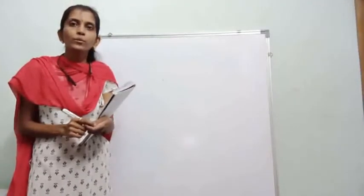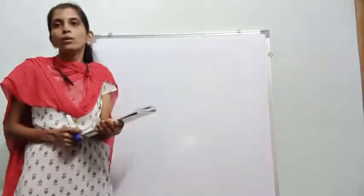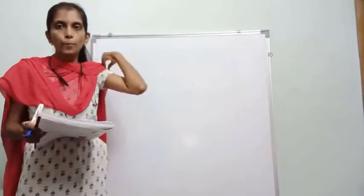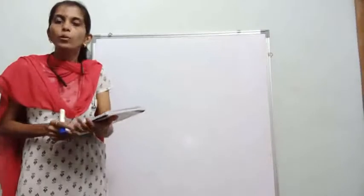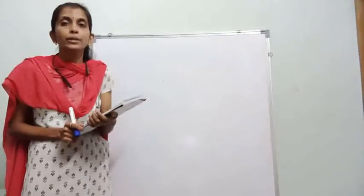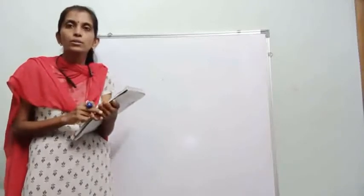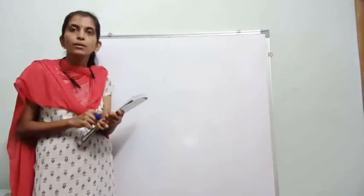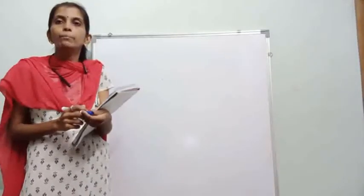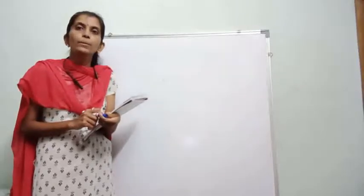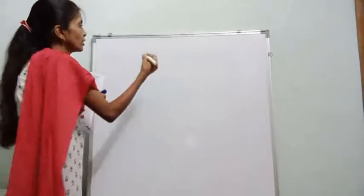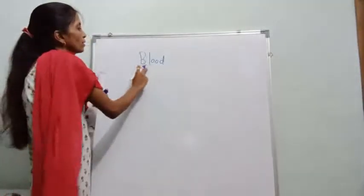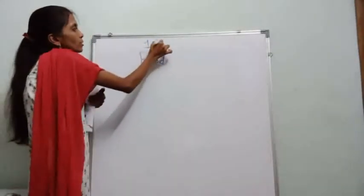Hello, good morning to all my dear students. Welcome back to our online teaching. In the previous period, we started the organs of the circulatory system. There are three main organs: the heart, blood vessels, and blood. Today we start the third organ — blood — from Lesson 1: Human Circulatory System.